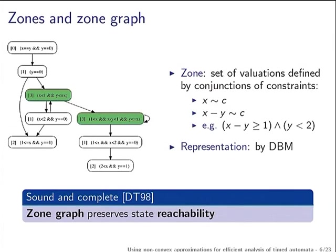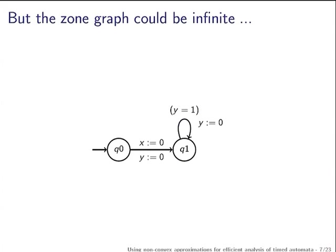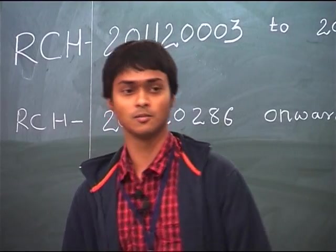We build the zone graph by starting to collect all the valuations and exploring the automaton one by one. This is a much more efficient solution and is also known to preserve state reachability — it is sound and complete with respect to reachability. There is just one small problem: it might actually not terminate.